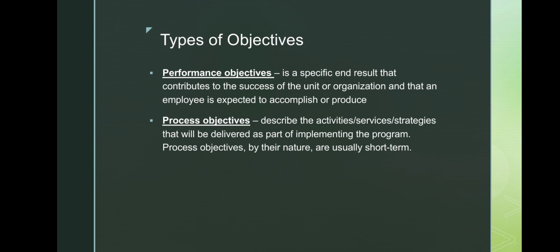We have two types of objectives: performance objectives and process objectives. A performance objective is a specific end result that contributes to the success of the unit or organization that an employee is expected to accomplish or produce — it is specific and tells you what you will do after the topic. The second, process objectives, describe the activities, services, or strategies that will be delivered as part of implementing the program; by their nature, process objectives are usually short-term.